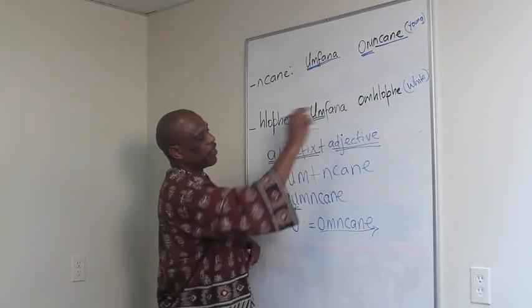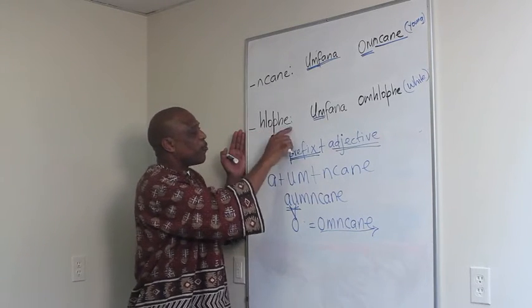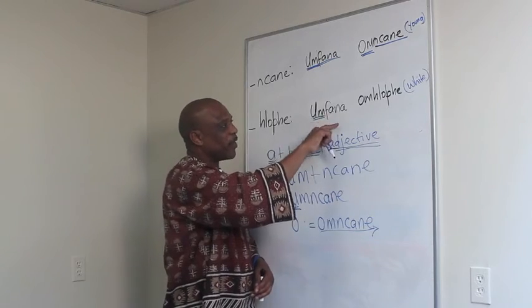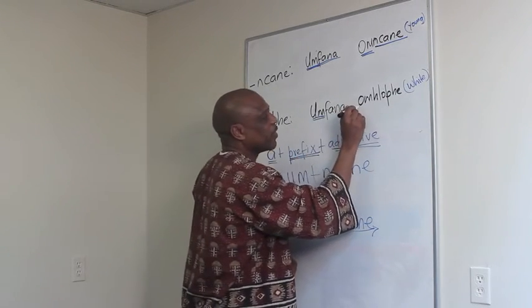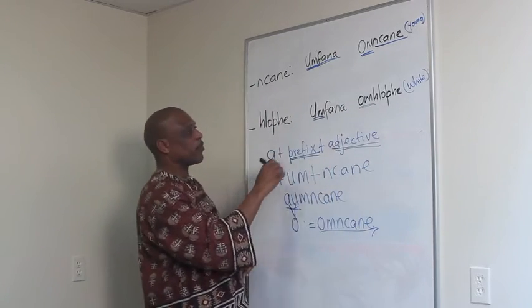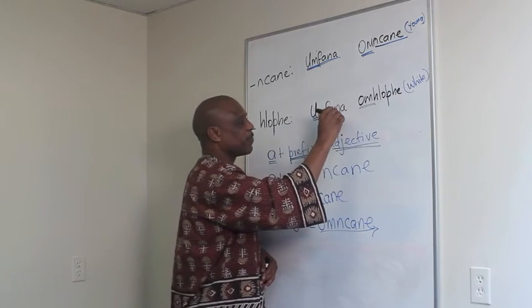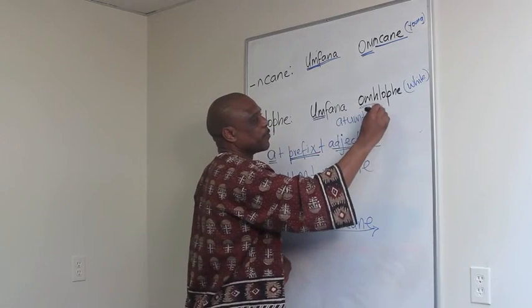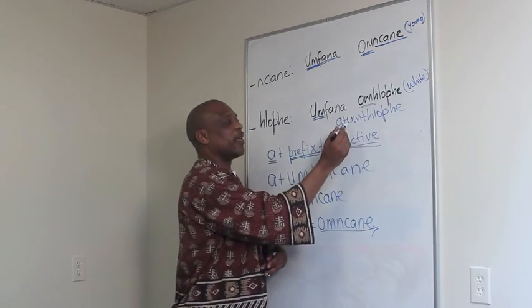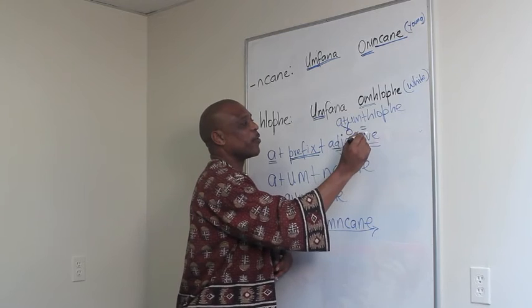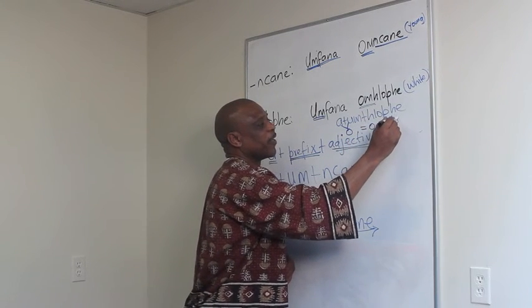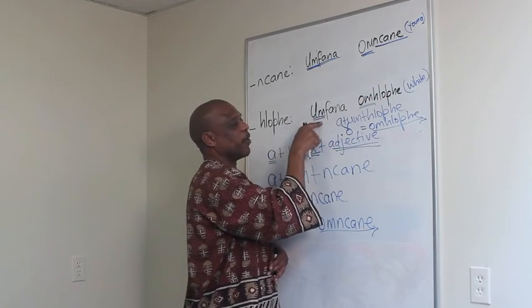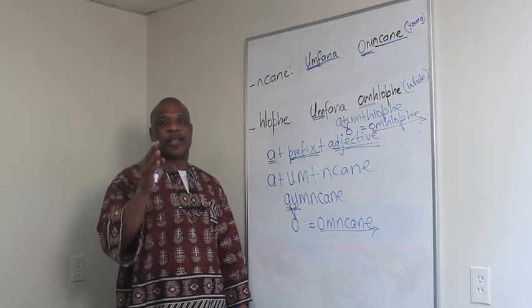We can do the same thing with this next sentence. Remember, 'Klope' means white, so here we have 'a white boy'. In Zulu we say 'a boy that is white'. How did we come up with that 'OM'? It's the same rule. We have an 'A' — the adjective modifier — and then the prefix 'UM', and then our adjective 'Klope'. At the end, that A and U become an O, and all you have is 'OM SHOPI'. The boy is now white — white describes the boy. I hope this makes it easier to understand adjectives.